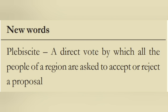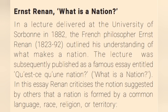Source A: Ernest Renan, 'What is a Nation?' In a lecture delivered at the University of Sorbonne in 1882, the French philosopher Ernest Renan (1823–92) outlined his understanding of what makes a nation. The lecture was subsequently published as a famous essay entitled 'Qu'est-ce qu'une nation?' — 'What is a Nation?' In this essay, Renan criticizes the notion suggested by others that a nation is formed by a common language, race, religion, or territory.